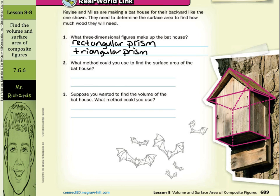What method could you use to find the surface area of the bat house? We could find the area of each face and then add those. Then we could subtract the faces that overlap, and then we would have the surface area of the bat house.